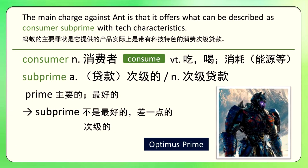下面来看consumer这个词，consumer是消费者，它的动词是consume。consume就是你消费了多少，就是你吃了多少东西、喝了多少饮料、消耗了多少能量、消耗了多少能源、消耗了多少电量，这些都是consume。